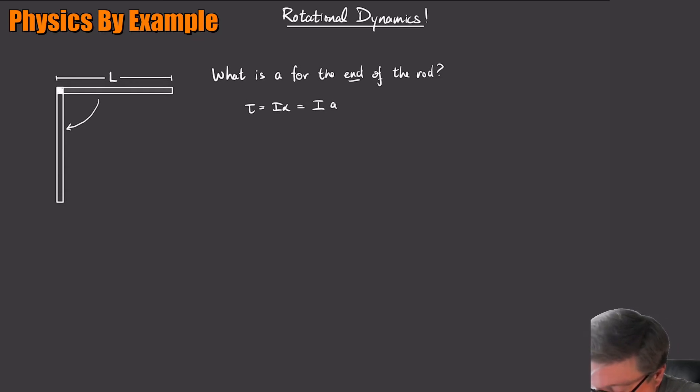Normally, like we said, if it's a wheel that's rolling without slipping, it's like A over R, right? But the end of the rod is L away, it's not really R away. So the connection looks like this, A over L.